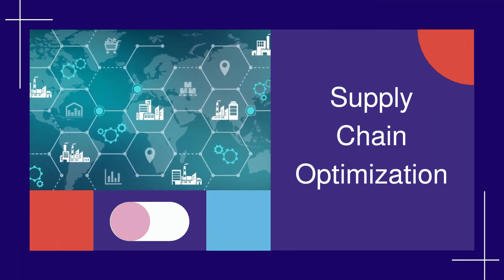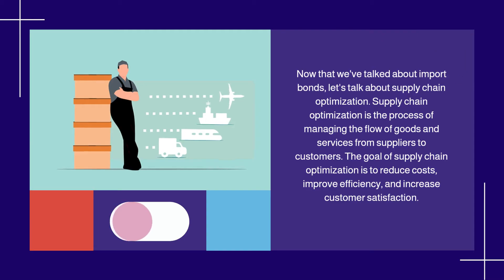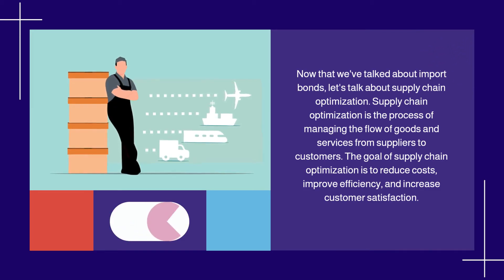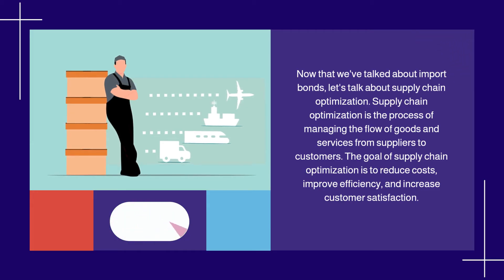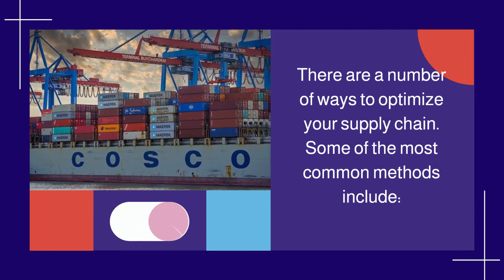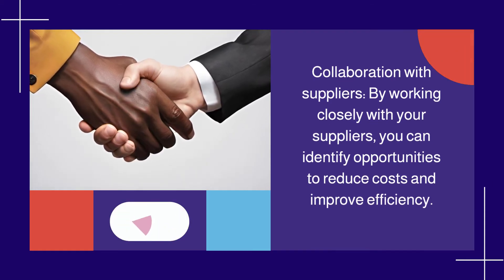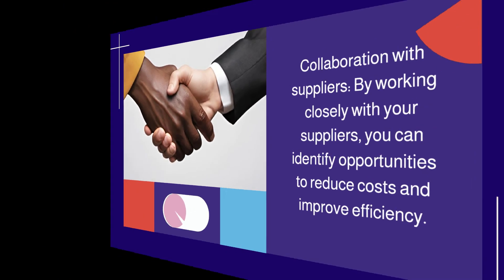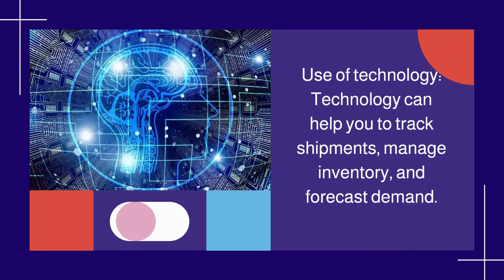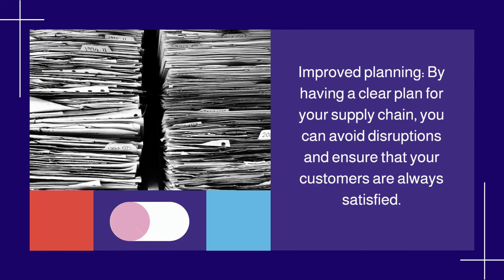Supply Chain Optimization. Now that we've talked about Import Bonds, let's talk about Supply Chain Optimization. Supply Chain Optimization is the process of managing the flow of goods and services from suppliers to customers. The goal is to reduce costs, improve efficiency, and increase customer satisfaction. Some of the most common methods include collaboration with suppliers to identify opportunities to reduce costs, use of technology to track shipments, manage inventory, and forecast demand, and improved planning to avoid disruptions and ensure customers are always satisfied.